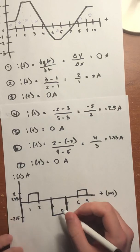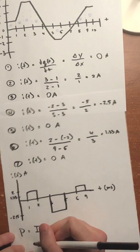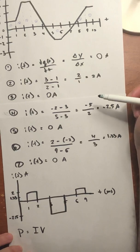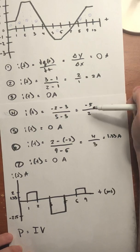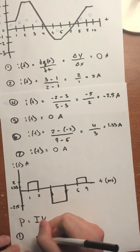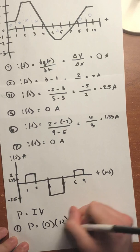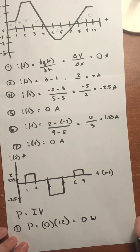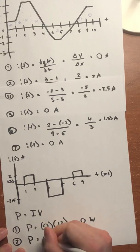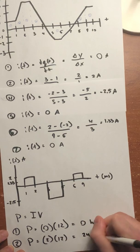To find power, we know that power equals current times voltage. For section 1: 0 amps times 12 volts gives 0 watts — that makes sense since there's no current flowing. For section 2: 2 amps times 12 volts gives 24 watts.